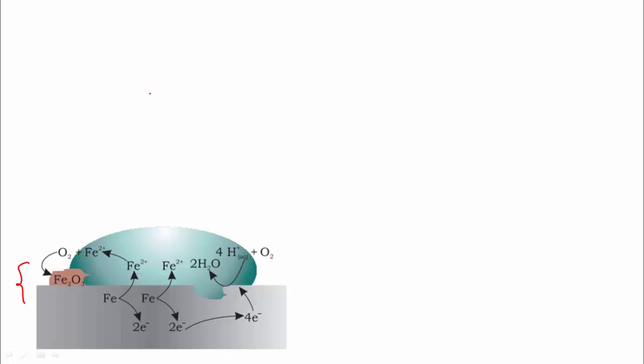At the anode, iron gets converted into Fe2+ as iron releases four electrons, and the potential for this is minus 0.44 volts.